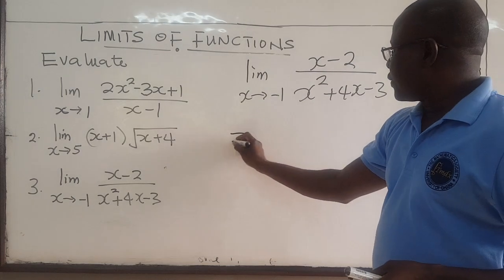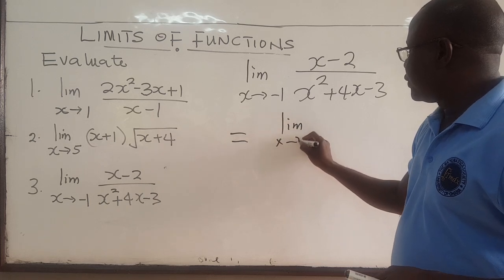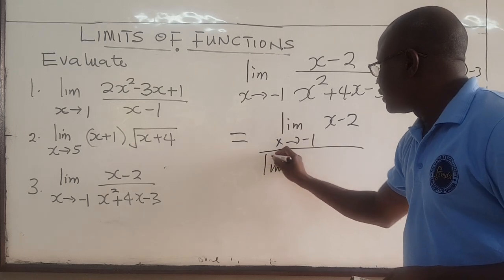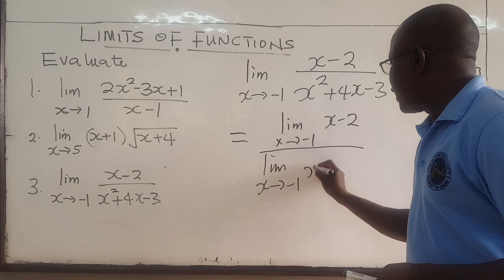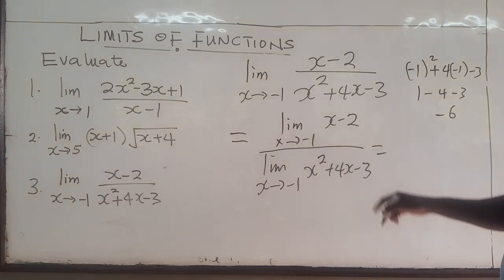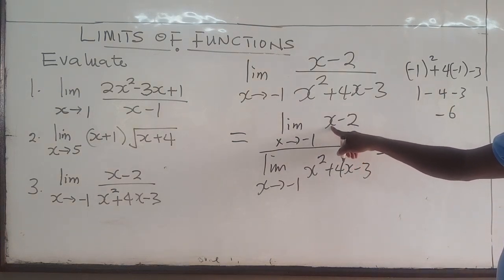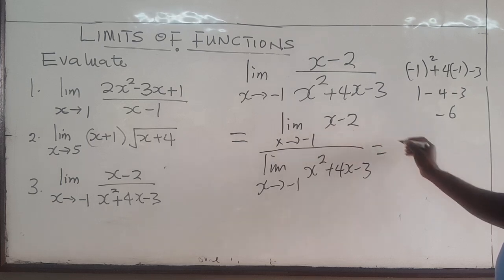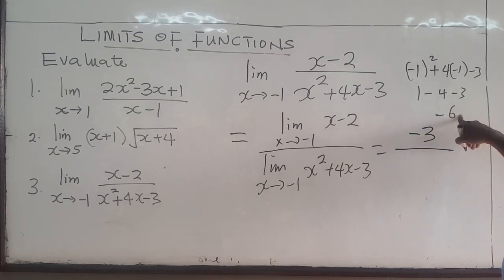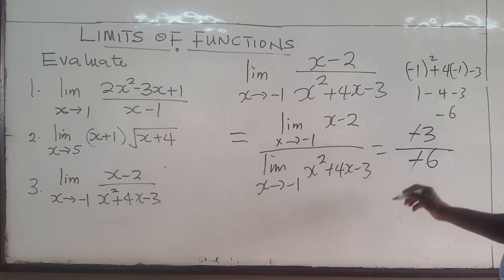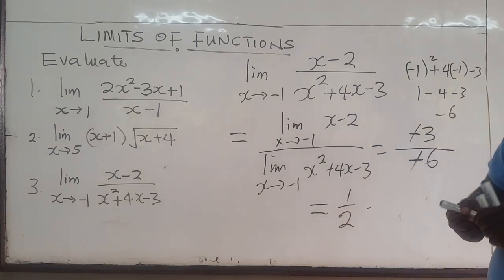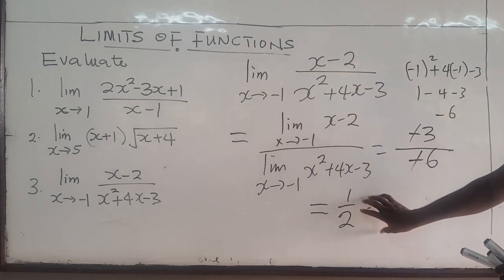So we can write this as the limit as x approaches negative 1 of (x minus 2), all over the limit as x approaches negative 1 of (x squared plus 4x minus 3). Plugging negative 1 into the numerator: negative 1 minus 2 is negative 3. The denominator we already computed is negative 6. The negatives cancel out and so this turns out to be 1 over 2. The limit as x approaches negative 1 is equal to 1 over 2.